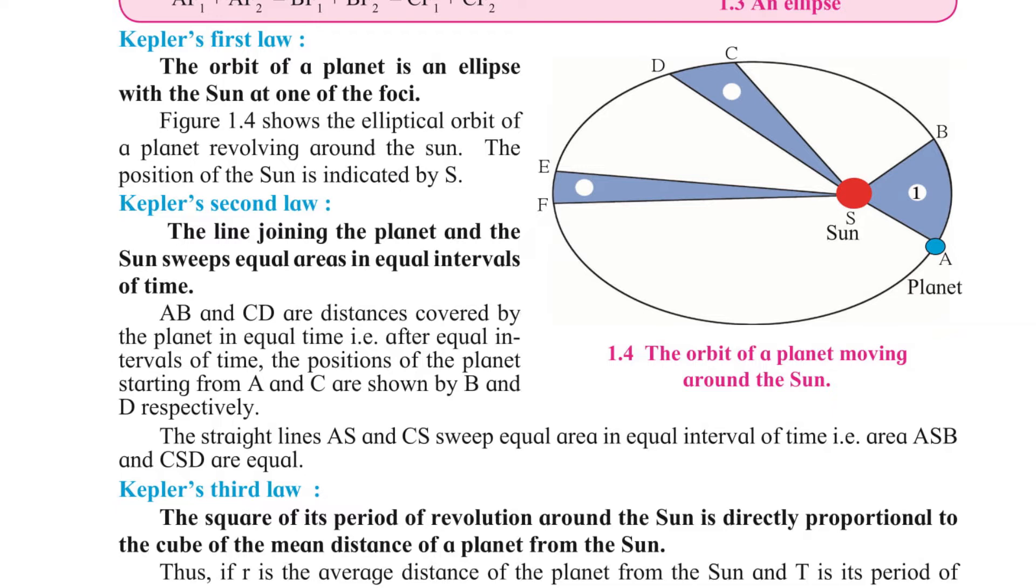What is Kepler's second law? The line joining the planet and the sun sweeps equal areas in equal intervals of time.